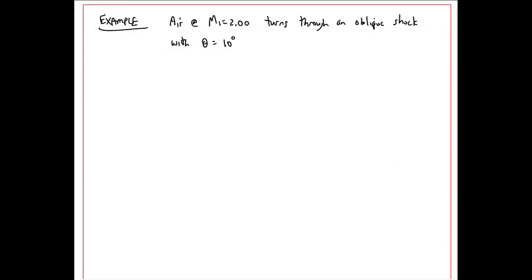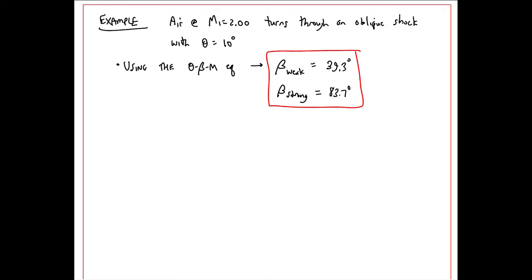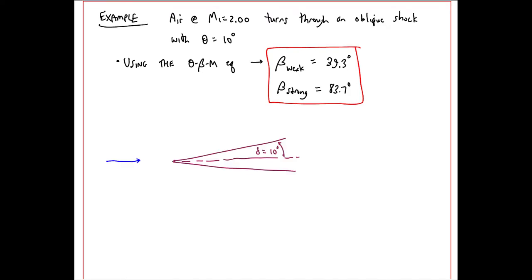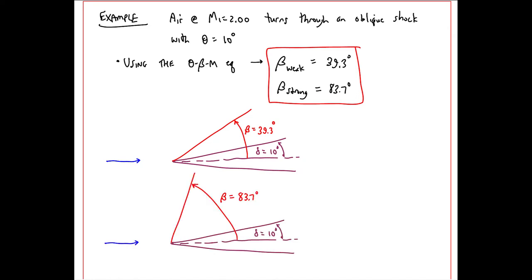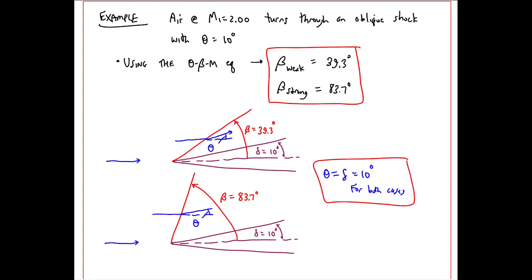Here's a quick example. At Mach number 2, the flow turns through an oblique shock with theta, the turning angle, of 10 degrees. Using the theta-beta-M equation, I get two betas: a weak one of 39.3 degrees and a strong one of 83.7 degrees. This is what you'd see with flow over a 2D wedge of half-angle delta equal to 10 degrees. We don't know which will actually occur without knowing the downstream conditions. If the wedge were really long, the weak one would be more likely, but if the body suddenly got thicker, the higher pressure could force the strong shock.